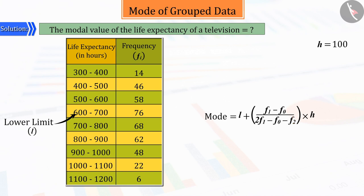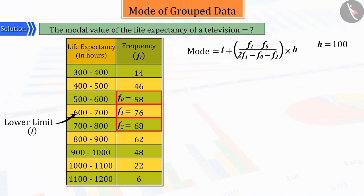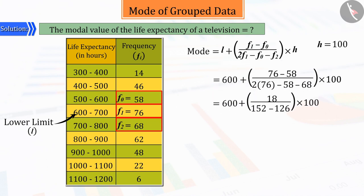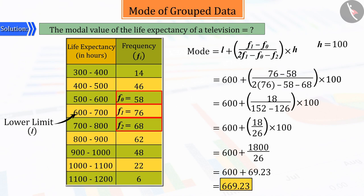Hence, the values of the lower limit of the modal class, the size of the class, the frequency of the modal class, the frequency of the class immediately before the modal class and the frequency of the class immediately after it, on being substituted in the modal formula and on being solved, give the value of the mode as 669.23.